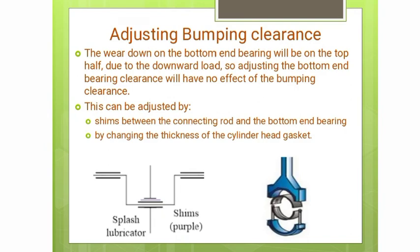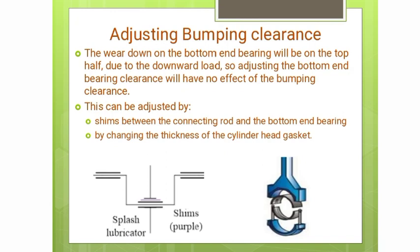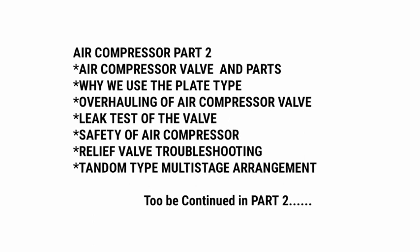To adjust bumping clearance: note that the wear down on the bottom end bearing is on the top half due to downward load, so adjusting bottom end bearing clearance has no effect on bumping clearance. Instead, use shims between the connecting rod and the bottom end bearing, or change the thickness of the cylinder head gasket. If the surveyor does not accept the shims method, the cylinder head gasket thickness can be increased or decreased as needed to achieve correct bumping clearance.